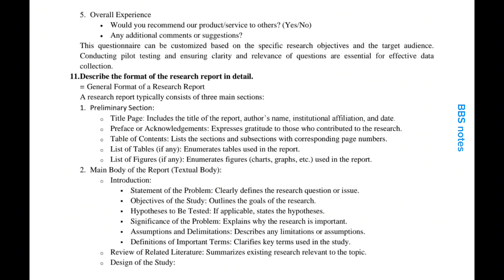Describe the format of the research report in detail. The general format of a research report is: 1. Preliminary section — title page (includes the title of the report, author's name, institutional affiliation and date); preface or acknowledgements (expresses gratitude to those who contributed); table of contents (lists sections and subsections with page numbers); list of tables, if any; list of figures, if any (enumerates charts, graphs, etc. used in the report).